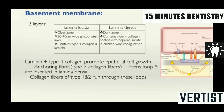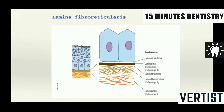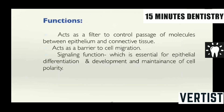The lamina lucida is a clear zone basically considered to contain glycoproteins, type IV collagen and laminin. Whereas the lamina densa is a dark zone consisting of type IV collagen fused with the proteoglycans, giving the typical chicken-wire configuration. And then you have the lamina fibroreticularis which is just adjacent to the lamina propria. The basal lamina acts as a filter to control passage of molecules between epithelium and the connective tissue. It also acts as a barrier to cell migration, with a signaling function which is essential for epithelial differentiation, development and maintenance of cell polarity.